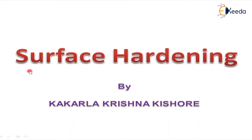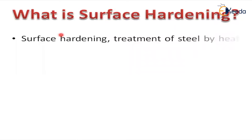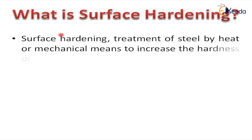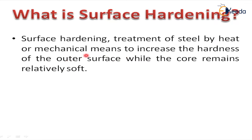Let me discuss surface hardening and its various features. The main purpose of surface hardening is to give the surface maximum hardness compared to the inner surface. Surface hardening is a heat treatment applied to steel by heat or mechanical means to increase the hardness of the outer surface. Compared to the core, the outer surface will have maximum hardness, while the core remains relatively soft.